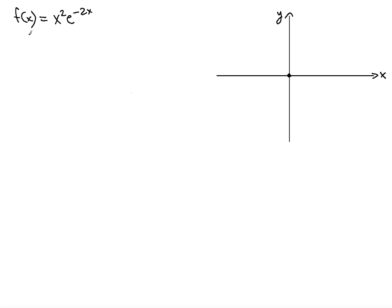Before we take the first derivative, take a look at this. The x is squared, and there's no way that e to the negative 2x can ever be negative. Even if you take this to infinity, the limit will be 0, but there's no way it can be negative. So my proposition is that x equals 0, and f(0) = 0, and that's going to be the absolute minimum.